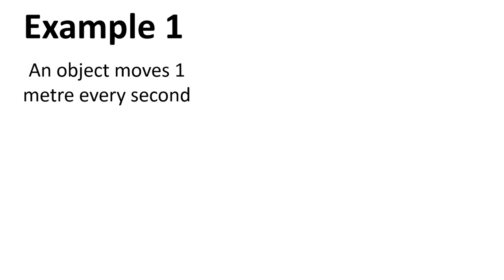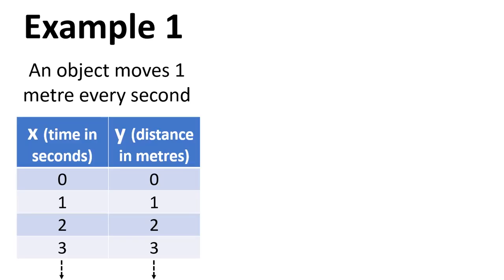So let's take a simple example where an object's moving at one metre every second. And we can record some information. So we can record the time, and we'll call that variable X. And then we can record the distance travelled, and we'll call that variable Y. And as you can see, over time, this is indeed moving one metre every second. So zero seconds, it's moved zero metres. And then after one second, it's moved one metre, and so on and so forth.